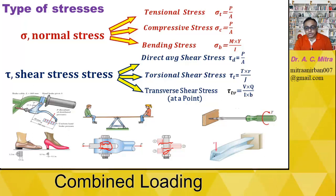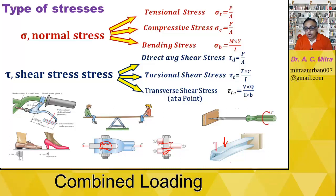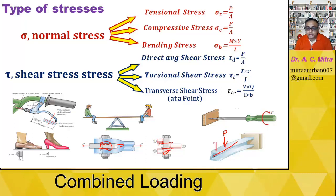The last type is transverse shear stress. There is a basic difference between average shear stress and transverse shear stress. In transverse shear, the load is applied in the perpendicular direction, but the stress is produced on a different plane. In direct shear, force and stress are along the same axis. Transverse shear stress is normally present in beams — cantilever or simply supported — and it is not uniform over the cross-section: it is zero at the top and bottom and maximum at the neutral axis.